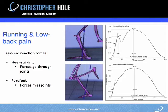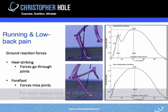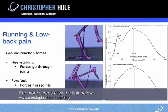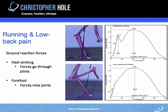If we look at the two graphs on the right, both show that whether we strike with the heel or the front of the foot, we're getting about two and a half to three times our body weight as a ground reaction force going up through our body.